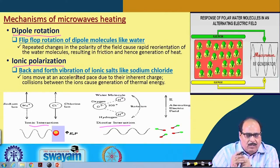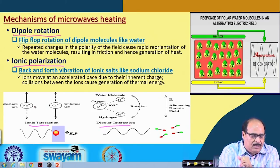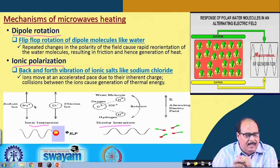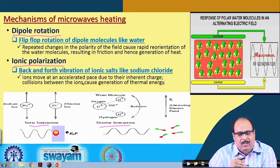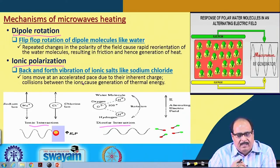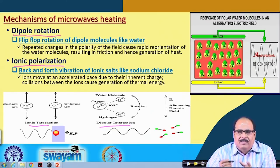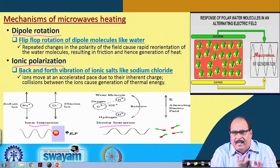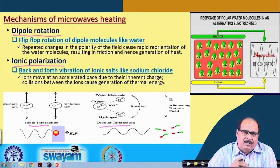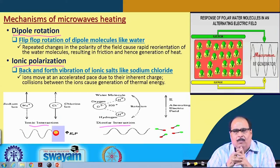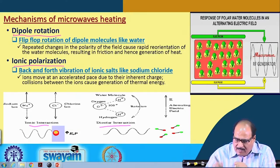Back-and-forth vibration of ionic salts like sodium chloride — sodium ions and chloride ions — also occurs. These ions move at an accelerated pace due to their internal charge, and collision between these ions causes generation of internal energy. The main mechanism is molecular collision: oppositely charged ions placed in the microwave field try to realign toward the opposite charge of the microwaves, causing molecular movement, friction, and heat generation.